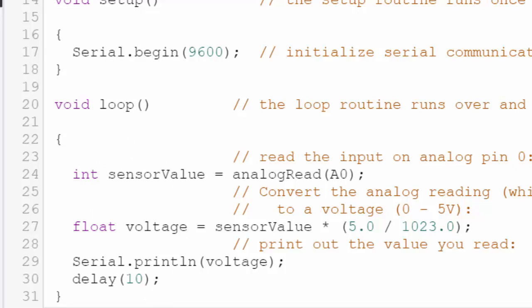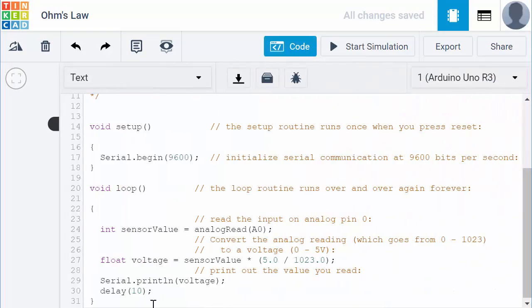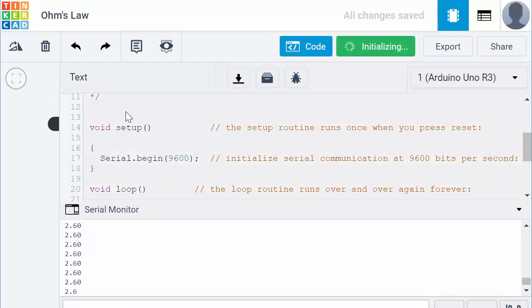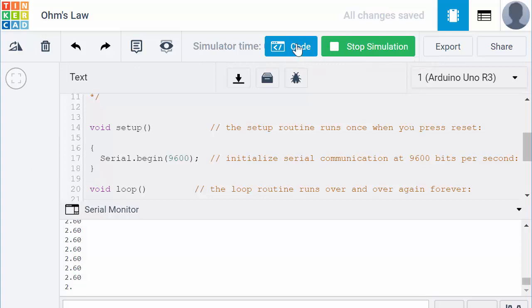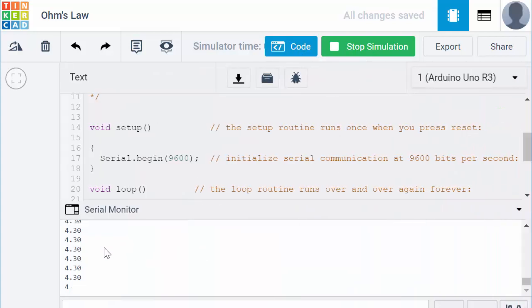So let's take a look at this. If I run this simulation, we have to have the code on, we watch the serial monitor, and we'll start the simulation. And as I turn the potentiometer by turning this potentiometer here, we'll get different values on the serial monitor.